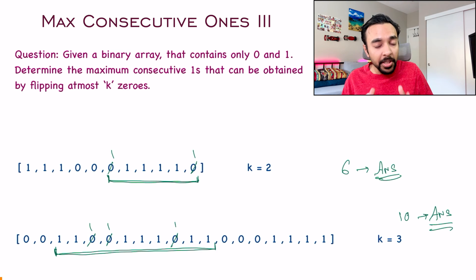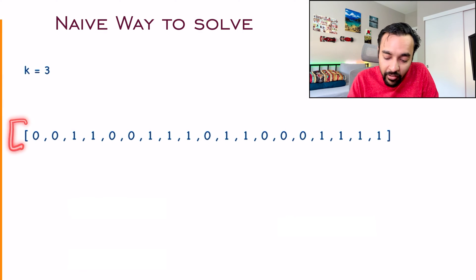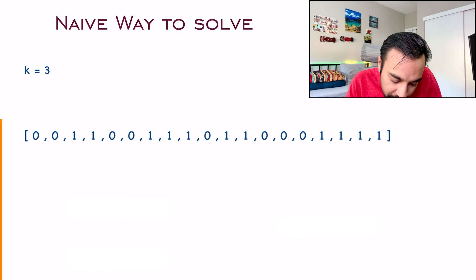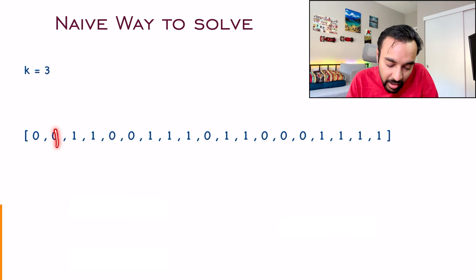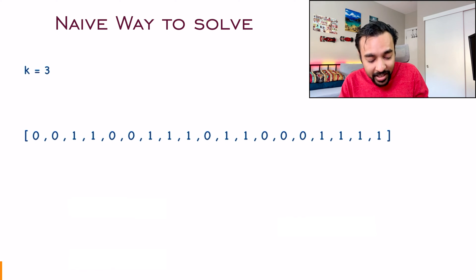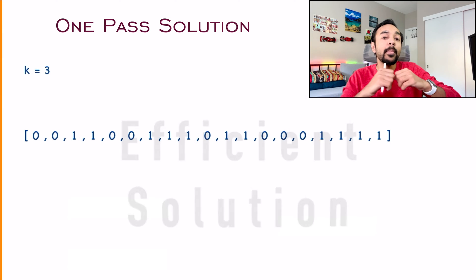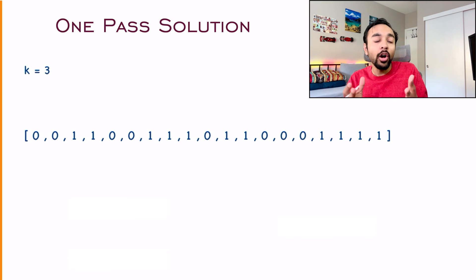If you feel you have understood the problem, feel free to try it out. Otherwise, let us dive into the solution. When you start to solve this problem, let us take up the generic case — the larger array with many different combinations and k equal to 3. If you go via the brute force approach it is going to end up taking a lot of time, trying out every different possible combination to replace three zeros. We want to determine the maximum consecutive ones just in a single iteration.